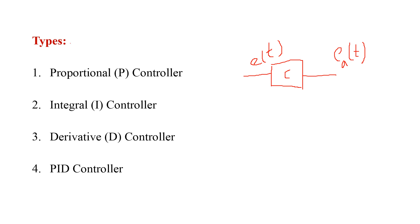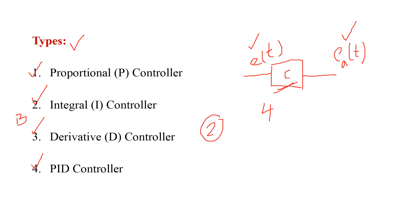Coming to types of controllers: depending upon the relation between the error signal and control signal, controllers are mainly classified into four basic types — proportional controller, integral controller, derivative controller, and PID controller (proportional plus integral plus derivative). We also have two combination types: the PI controller (proportional plus integral) and the PD controller (proportional plus derivative).